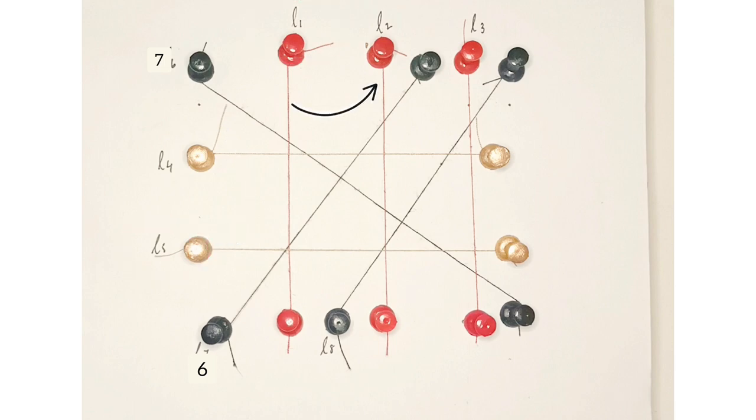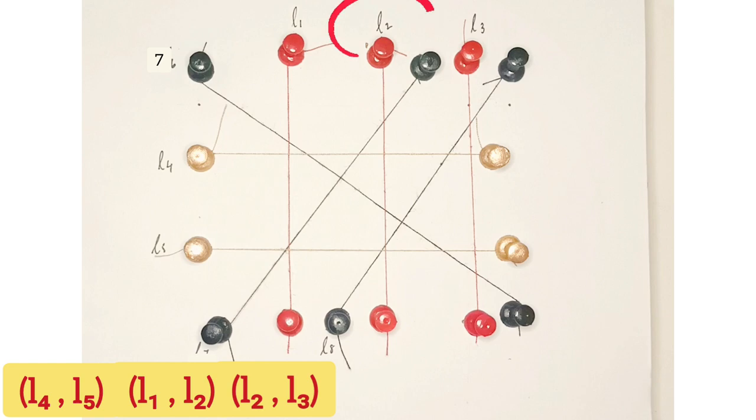L1 is parallel to L2. L2 is parallel to L3, and L1 is parallel to L3. L6 is also parallel to L8. So (L4, L5), (L1, L2), (L2, L3), and (L6, L8) belong to R.